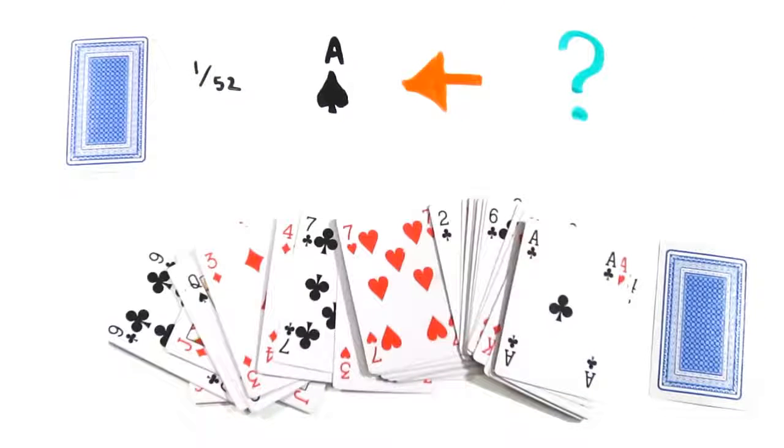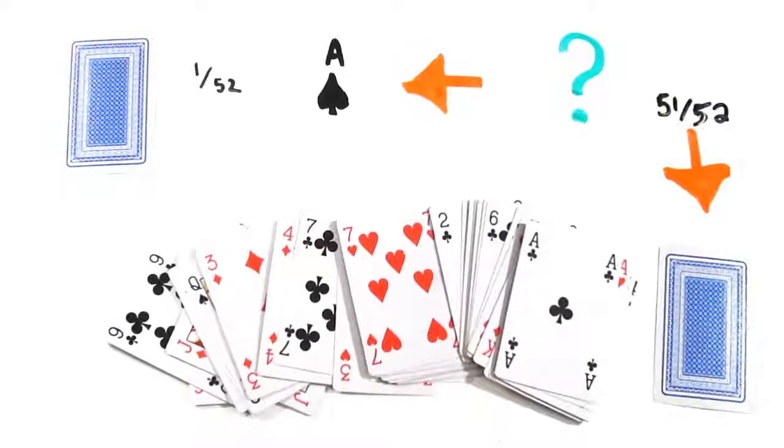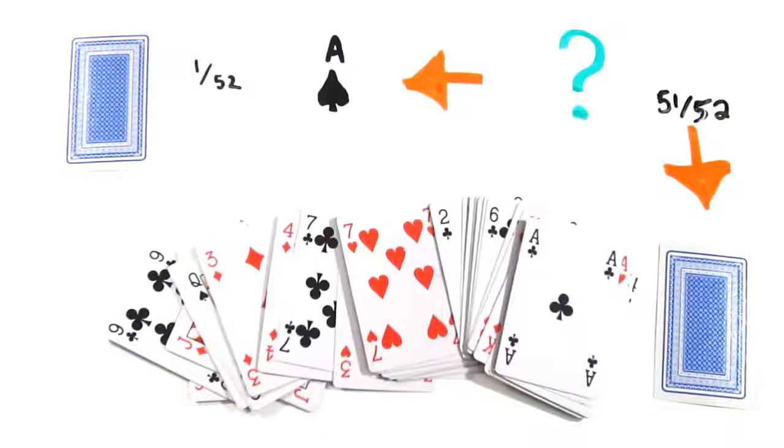which one seems more likely to be the Ace of Spades? The one you chose randomly out of a deck of 52, or the one I purposefully and suspiciously left turned down? It turns out, your card remains at a chance of 1 in 52, where my card now has a 51 out of 52 probability of being the Ace of Spades.